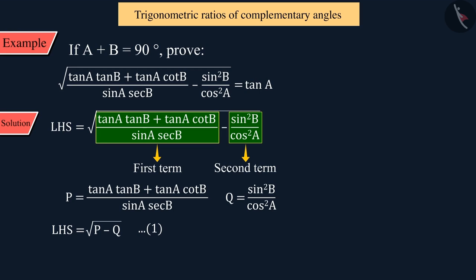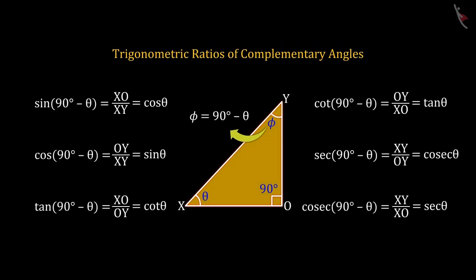Since it is given that A plus B is equal to 90 degrees, to solve these equations, we will use trigonometric ratios of complementary angles.